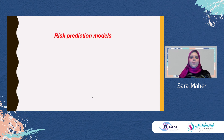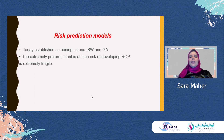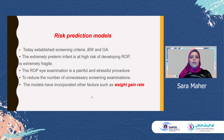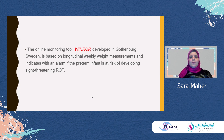The third clinical application is risk prediction models. Today, the established screening criteria for ROP are birth weight and gestational age. However, the extremely preterm infants who are at high risk of developing ROP are extremely fragile, and the ROP eye examination is a really painful and stressful procedure. To reduce the number of unnecessary screening examinations, risk prediction models have been invented. They incorporate other factors like the weight gain rate. The most famous of these prediction models is the online monitoring tool WINROP, which was developed in Gothenburg, Sweden, and is based on longitudinal weekly weight measurements of the infant. It gives an alarm if the preterm infant is at risk of developing sight-threatening ROP.